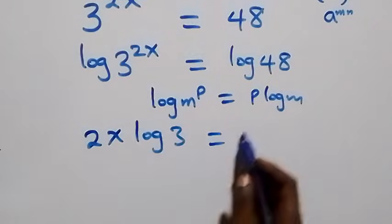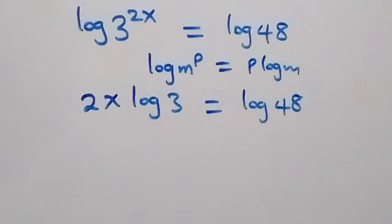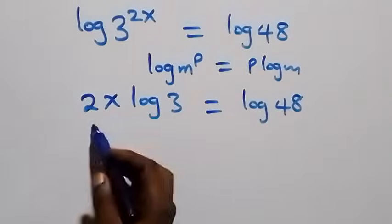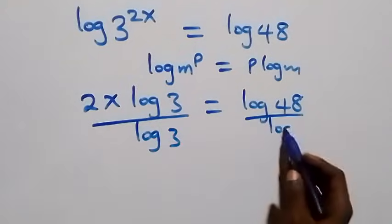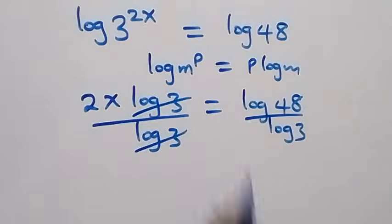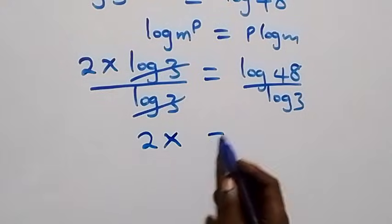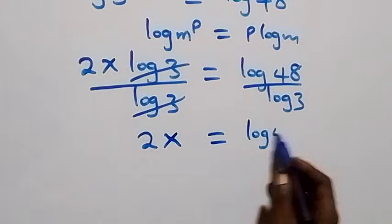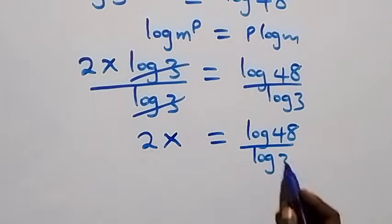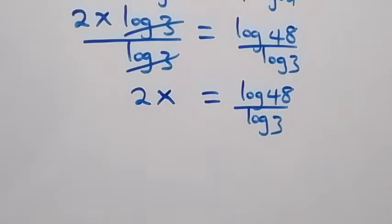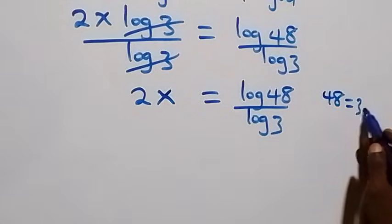The next step is to divide both sides by log 3. Log 3 cancels on the left, and we have 2x equals log 48 over log 3. From here, we can express 48 as 3 times 16.